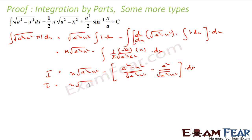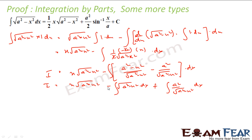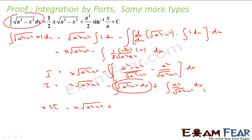The first term is −I, so we get 2I = x·√(a²−x²) + a²·∫dx/√(a²−x²). That integral is sin⁻¹(x/a), so 2I = x·√(a²−x²) + a²·sin⁻¹(x/a), giving I = (x/2)√(a²−x²) + (a²/2)·sin⁻¹(x/a) + C.